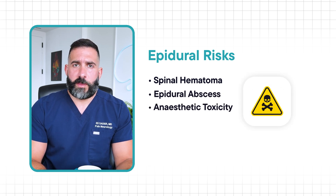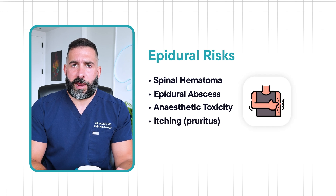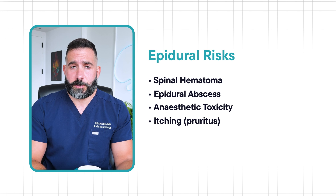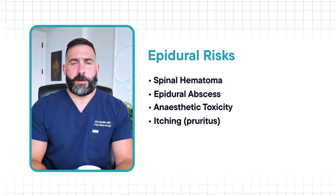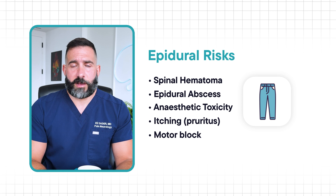A bit more common is itching — pruritus — which can happen because of the opioid, as that's one of the common side effects. Another side effect is a motor block: if the concentration or volume of local anesthetic used is higher than it should be to achieve proper pain control, it might lead to weakness in your legs after the procedure. But that should go away when the infusion of medication has been stopped.